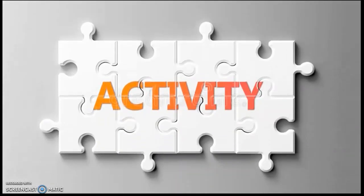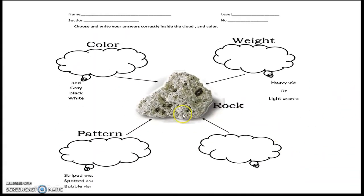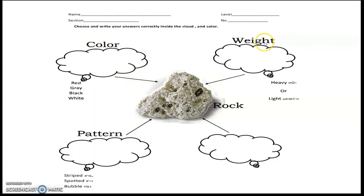Now the activity. Write your name, section, level, and number. Choose and write your answers correctly inside the cloud — this is the cloud. For example, look at this rock. Give the color of the rock, the weight of the rock, and the pattern of the rock. For weight, choose heavy or light. For color, choose red, gray, black, or white. For pattern, choose striped, spotted, or bubble, and write inside the cloud.